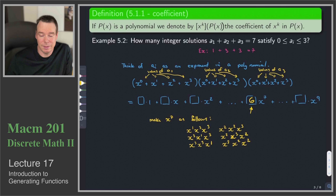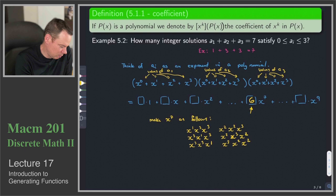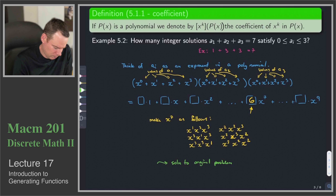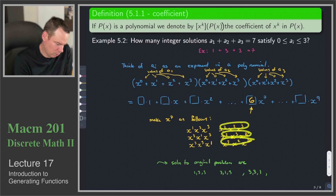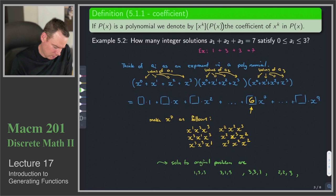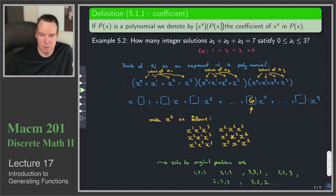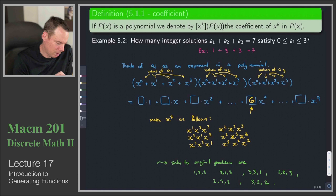I can also use x² from the first, needing x⁵ from the remaining two: giving (2,2,3) or (2,3,2). Using x³ from the first, I need x⁴ from the remaining: (3,1,3) already counted, or (3,3,1), or (3,2,2). So there are six ways to make x⁷, corresponding to six solutions: (1,3,3), (3,1,3), (3,3,1), (2,2,3), (2,3,2), (3,2,2). There are six solutions.